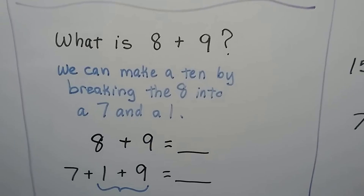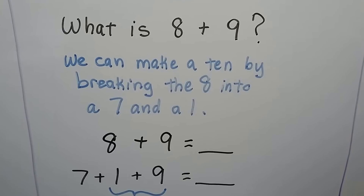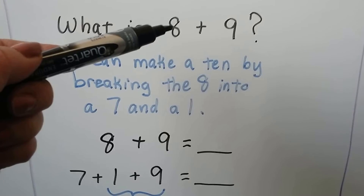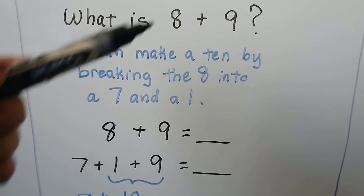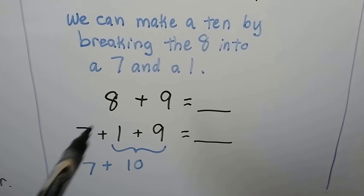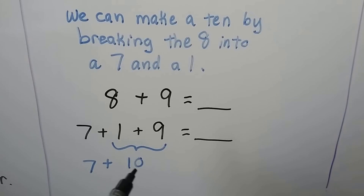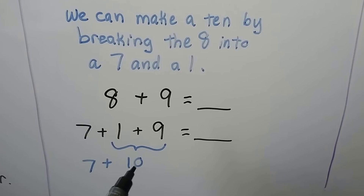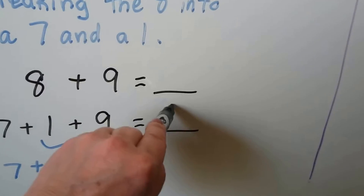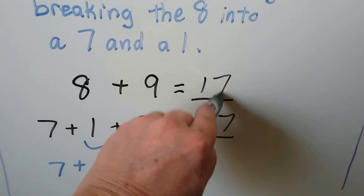What is 8 plus 9? We can make a 10 by breaking the 8 into a 7 and a 1. If we break this 8 into a 7 and a 1, we can give that 1 to the 9 to make a 10. Then we can add 7 plus 10 — that's a lot easier. 7 plus 10 is 17, so 8 plus 9 is equal to 17.